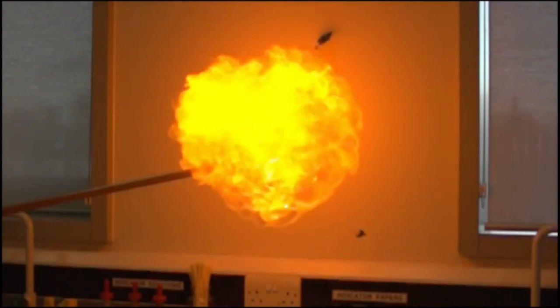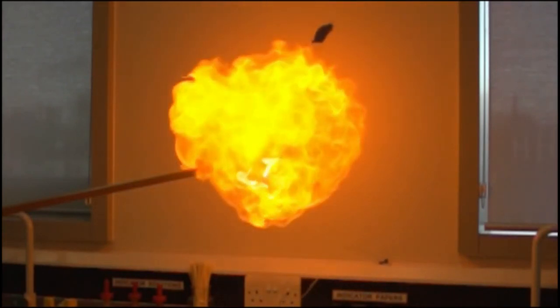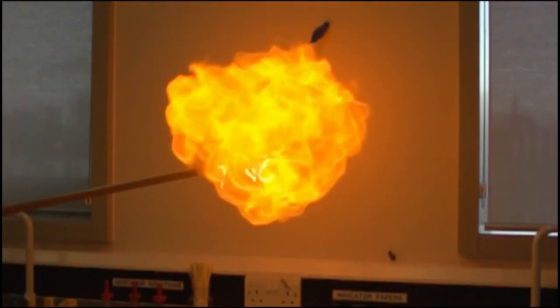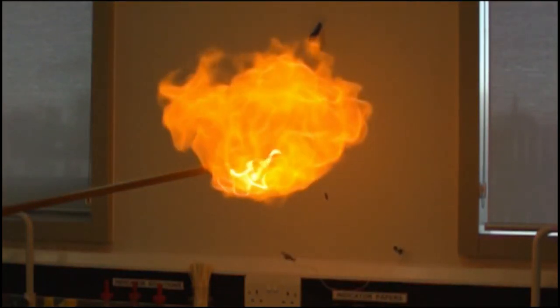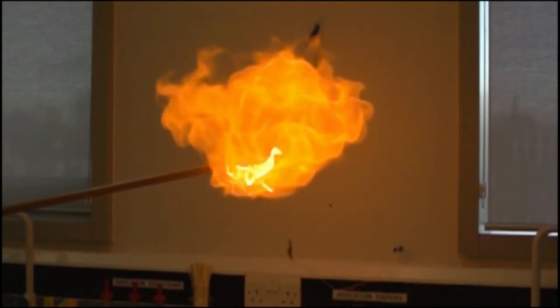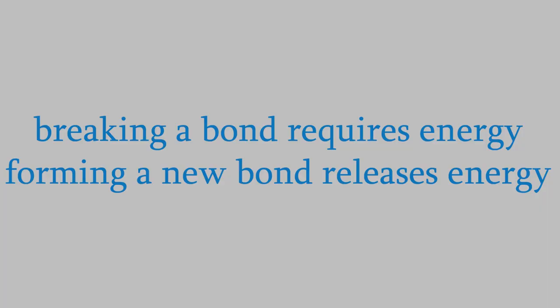To answer that question, we need to start by thinking about what happens during a chemical reaction. Back in General Chemistry 1, we saw that almost all chemical reactions involve breaking some bonds and forming new ones. In order to break those bonds, we need energy. Where does that energy come from? We can get that energy from light, but in most chemical reactions, the energy is kinetic energy that comes from collisions between the reactant molecules.